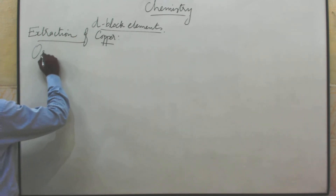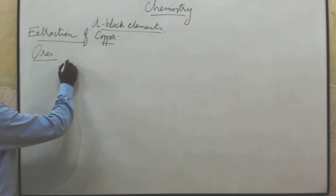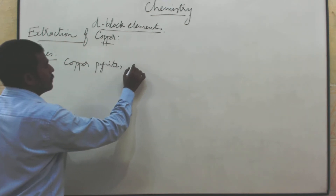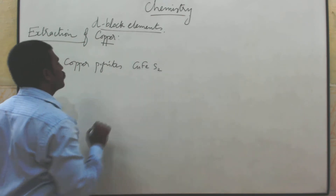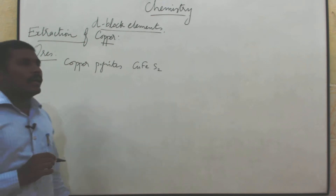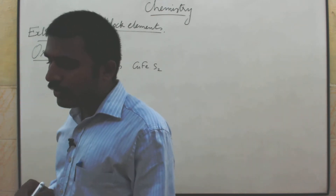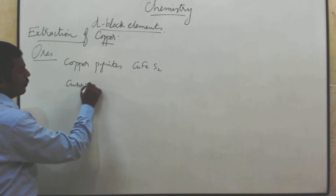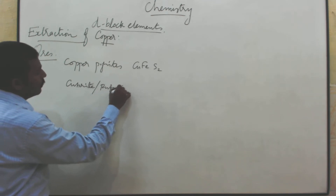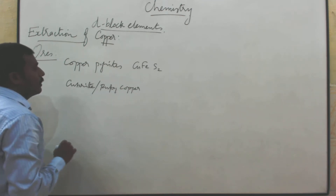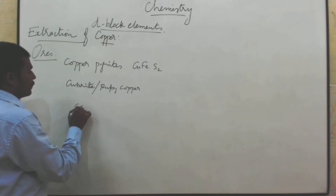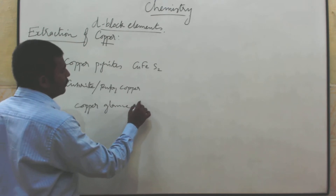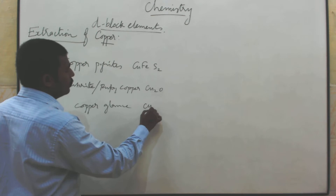What are the ores of copper? Copper pyrite — CuFeS₂. Then copper glance. Cuprite, or ruby copper — Cu₂O. Copper glance means Cu₂S.